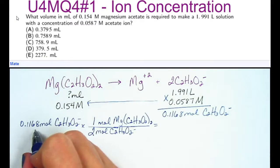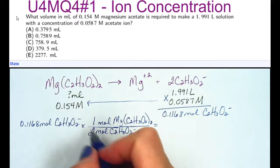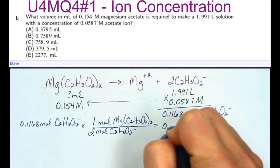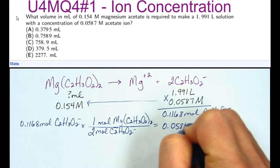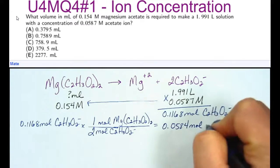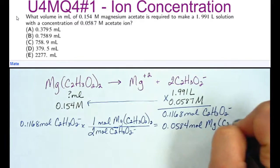So when I take 0.1168 and I divide it by 2, I get 0.0584 moles, and that is of magnesium acetate.